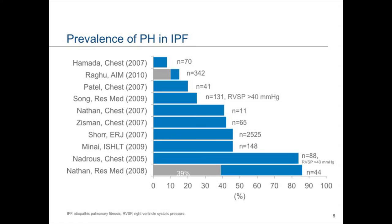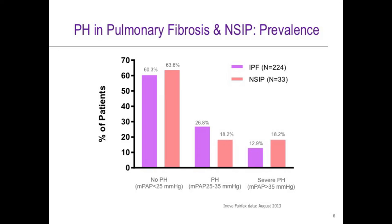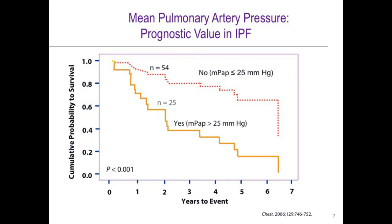If you look at the prevalence of pulmonary hypertension in IPF, it really varies and depends when you look for it. It might be as low as around 10-15% and as high as 85%. If you look for it early, it's more in the range of 10-15%; if you look for it late — at the time patients are receiving a lung transplant — it's closer to 85%. So it tends to be progressive over time. Any form of interstitial lung disease, if patients have had it long enough and if they advance, can at some point develop pulmonary hypertension.